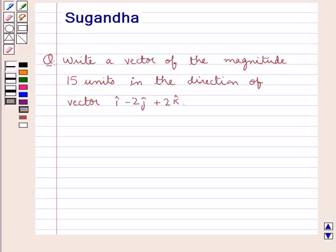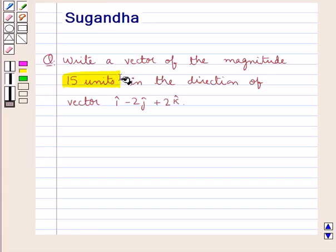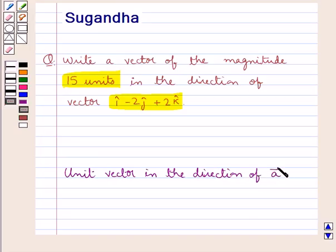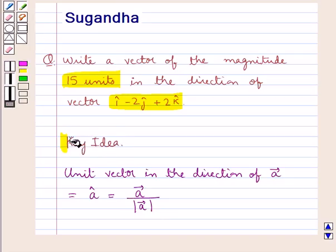Hello and welcome to the session. In this session we discuss the following question: Write a vector of magnitude 15 units in the direction of vector i cap minus 2j cap plus 2k cap. We know that a unit vector in the direction of vector a is given by a cap, which is equal to vector a upon the magnitude of vector a. This is the key idea that we use for this question. Let's now proceed with the solution.